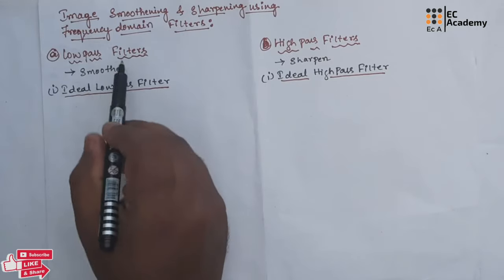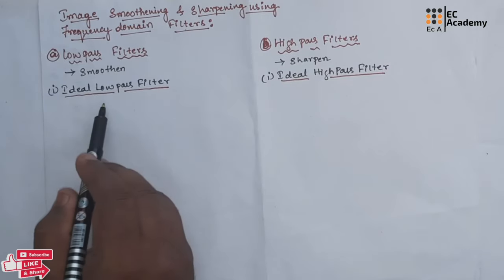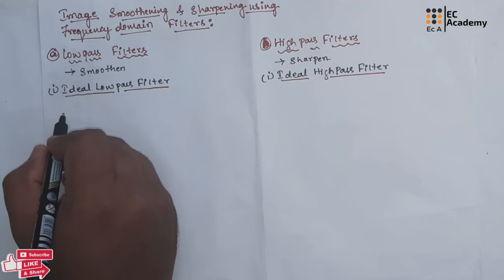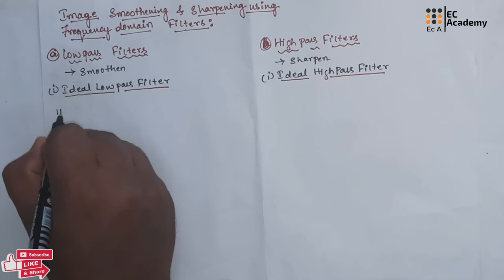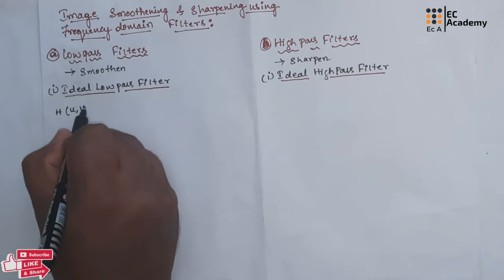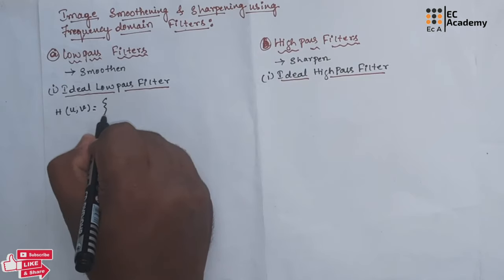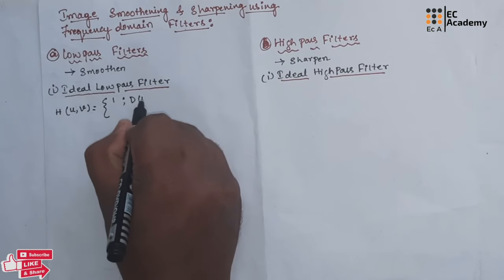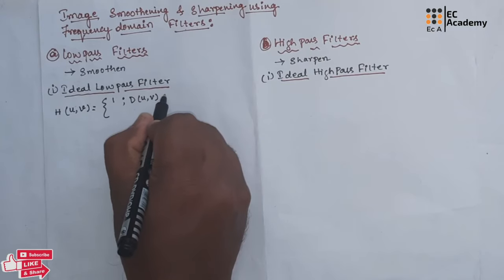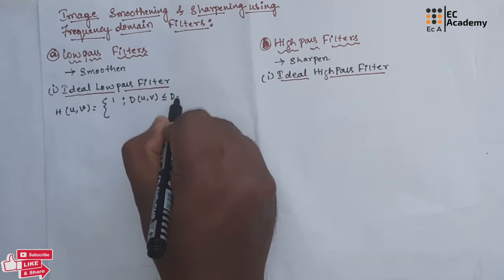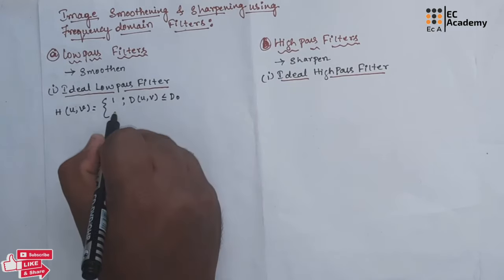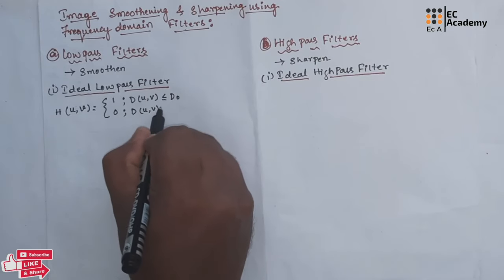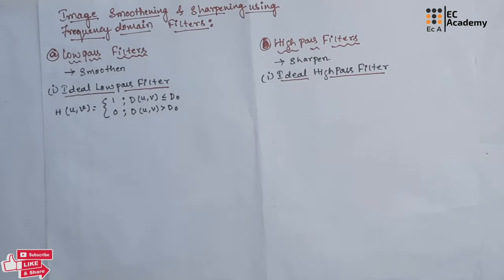The first type of low pass filter in frequency domain is the ideal low pass filter. The transformation function of ideal low pass filter can be written as: H(u,v) = 1 for D(u,v) ≤ D0, and H(u,v) = 0 for D(u,v) > D0.